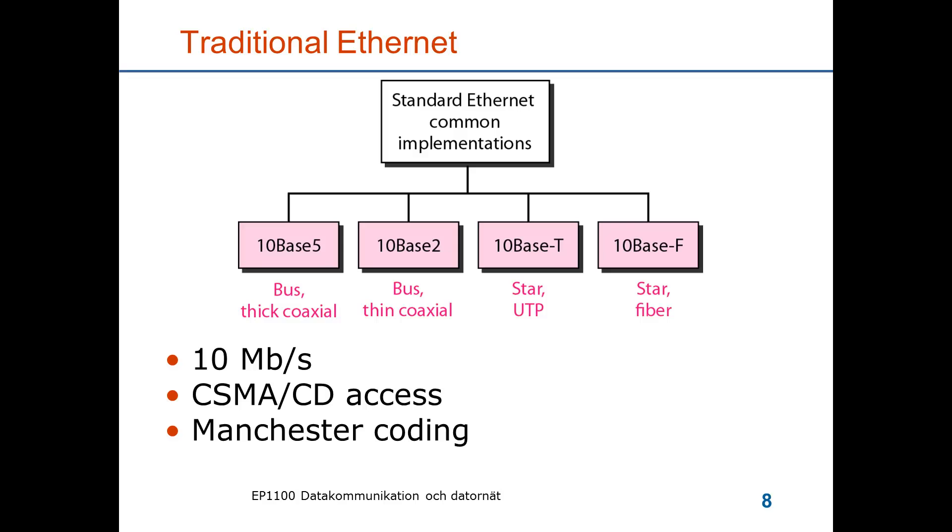If we look at the traditional Ethernet as originally standardized it had a data rate of 10 Mbps. It used CSMA CD for medium access control. And the coding for the medium was Manchester coding which has good synchronization properties. The figure here shows two different topologies, bus topology and star topology and four different types of medium: thick or thin coaxial cable, unshielded twisted pair wires and fiber.